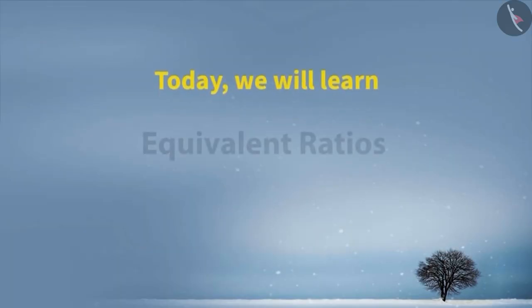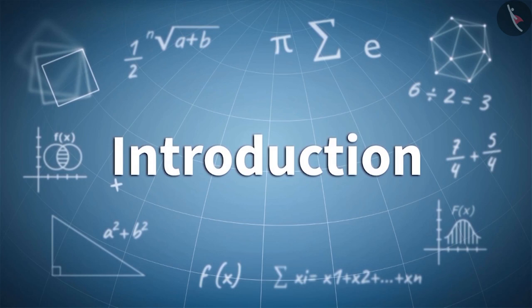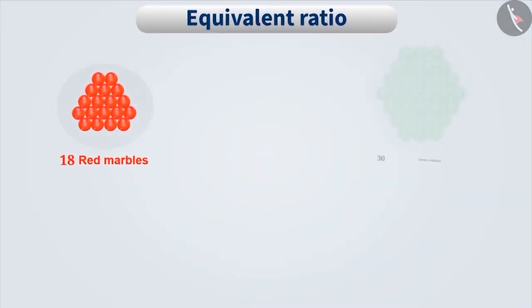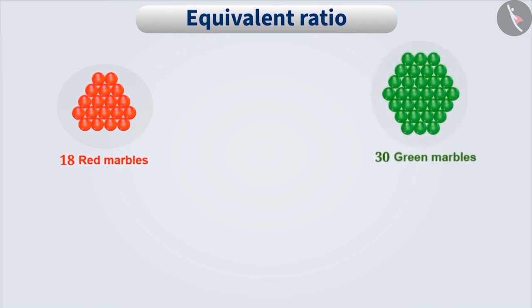Today, we will learn about equivalent ratios. Rahul has 18 red marbles and 30 green marbles. Here, the number of green marbles is higher. Can you tell me how many times the number of red marbles is of the green marbles?